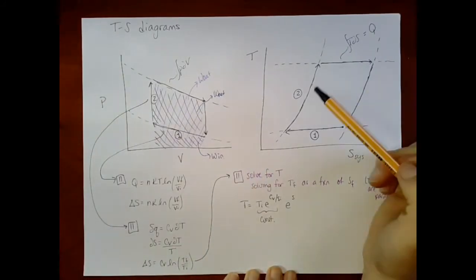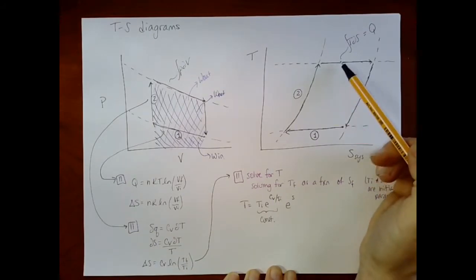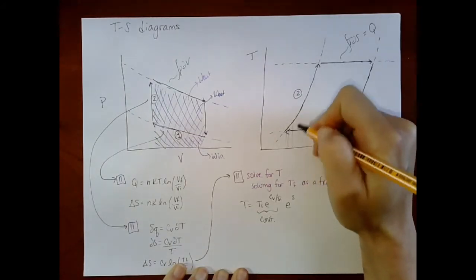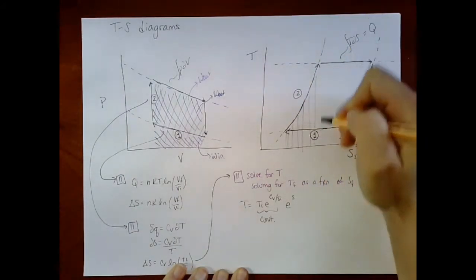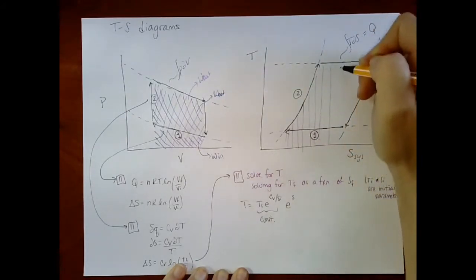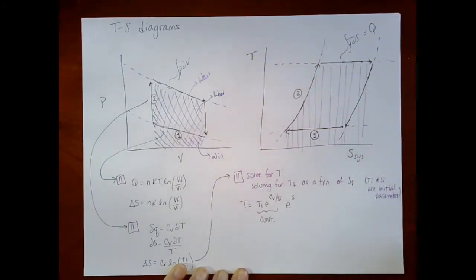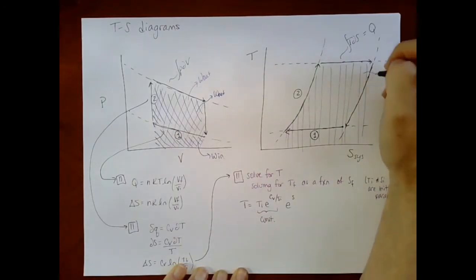For the processes, for these two processes, these are the two processes where I'm absorbing heat from my hot reservoir. So if I think about the area under these curves, the area under those curves represents QH.